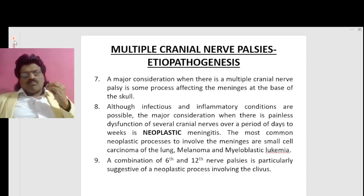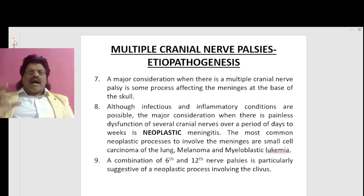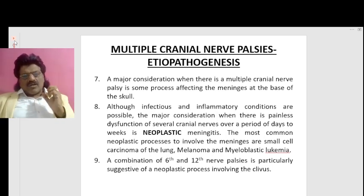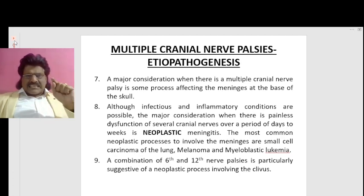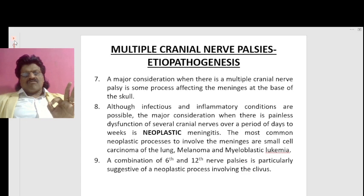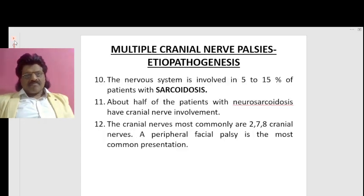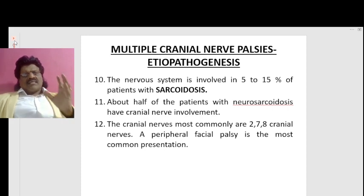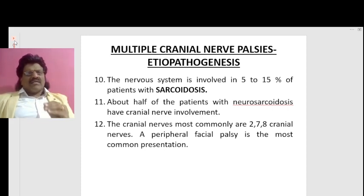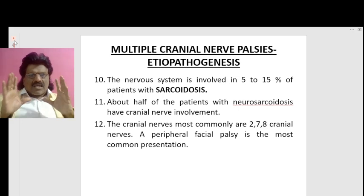The most common neoplastic processes to involve the meninges are small cell carcinoma of the lung, melanoma, and myeloblastic leukemia. A combination of sixth and twelfth cranial nerve palsies is particularly suggestive of a neoplastic process involving the clivus. The nervous system is involved in five to fifteen percent of patients with sarcoidosis.